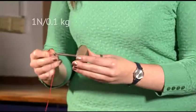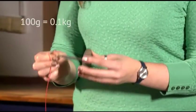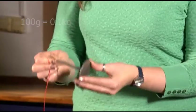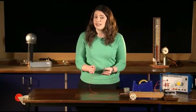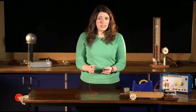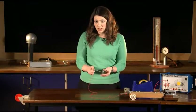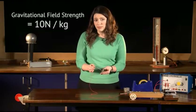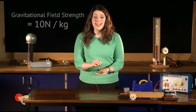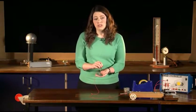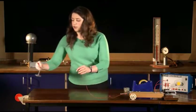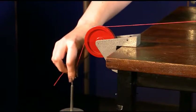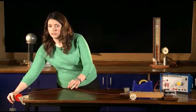Gravity will pull it down with one newton of force. That's because the mass hanger weighs 100 grams or 0.1 kilograms. Weight equals mass times gravity, and gravitational field strength on Earth is 10 newtons per kilogram, so 0.1 times 10 gives me one newton. I'm going to attach it over this pulley here to make sure it runs smoothly in the right direction.